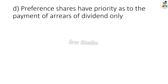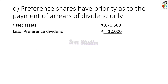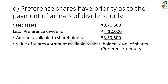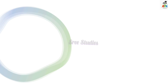The last option: preference shares have priority as to the payment of arrears of dividend only. Net asset minus preference dividend arrears (calculated for 2 years) gives the amount available to shareholders. Here we have taken both preference as well as equity shares, so the value of share is Rs. 8.98. When the problem has given different options, you have to calculate like this only. Hope you understood. Until the next, it's bye from Srimati. Thank you.